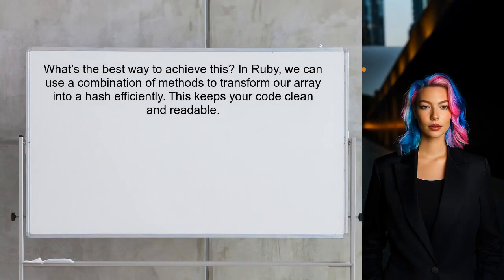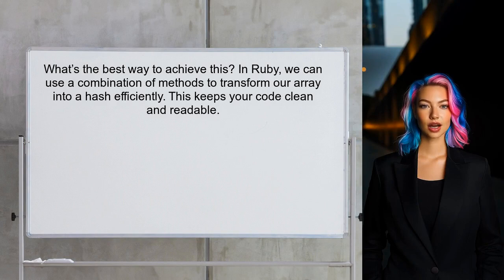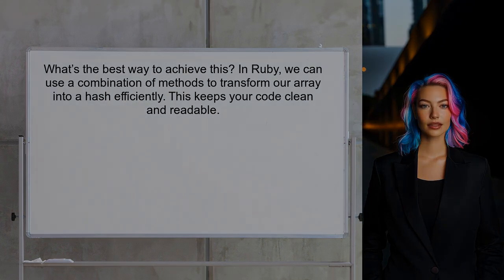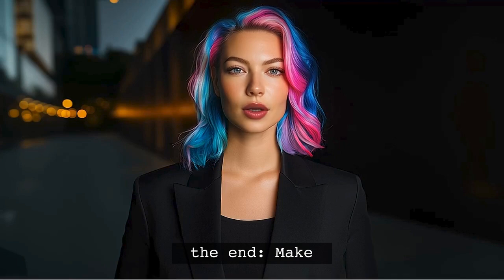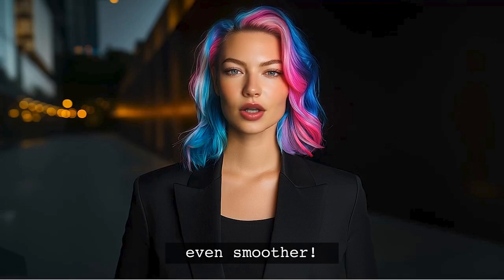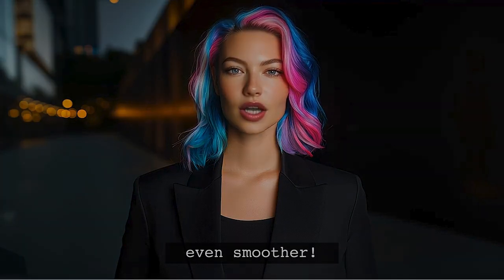So what's the best way to achieve this? In Ruby, we can use a combination of methods to transform our array into a hash efficiently. This not only saves time, but also keeps your code clean and readable. Stick around — at the end of this video, I'll share a quick tip that will make your Ruby coding even smoother.